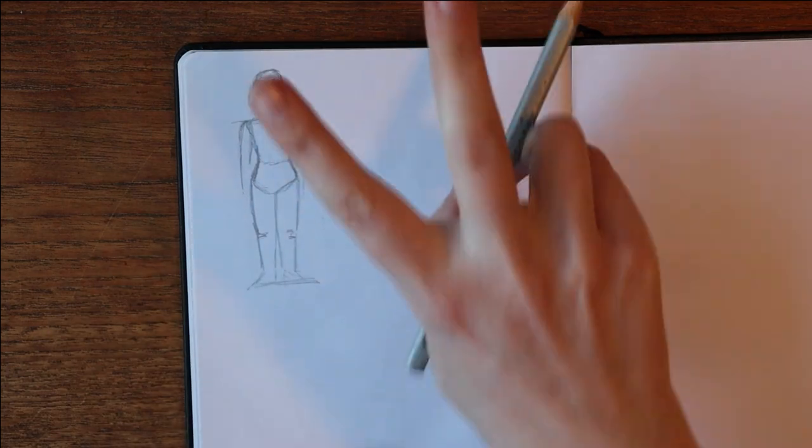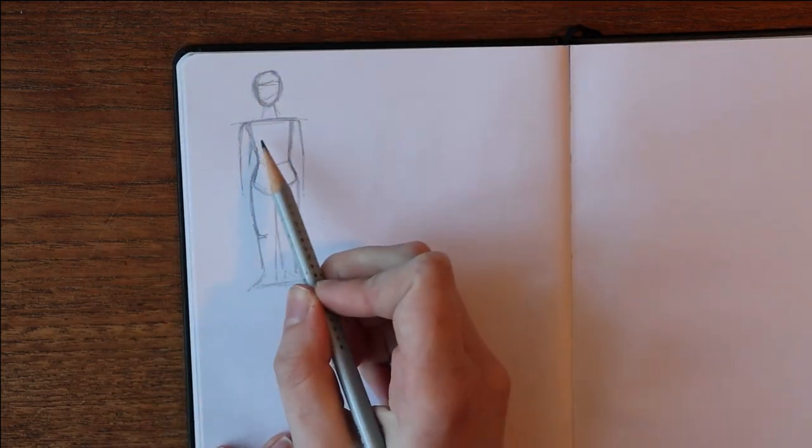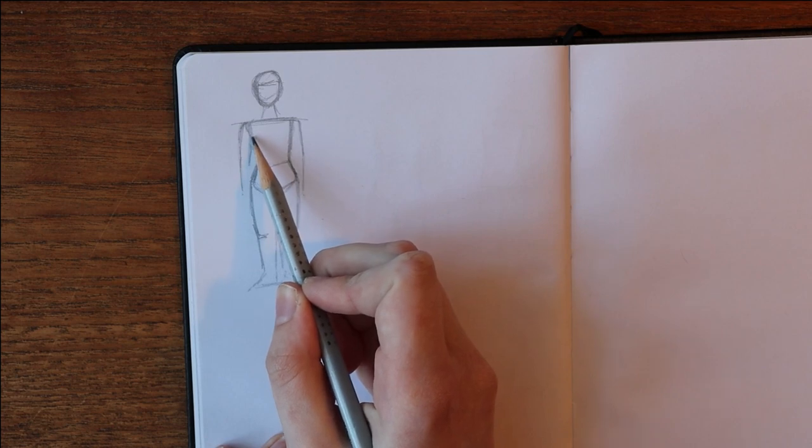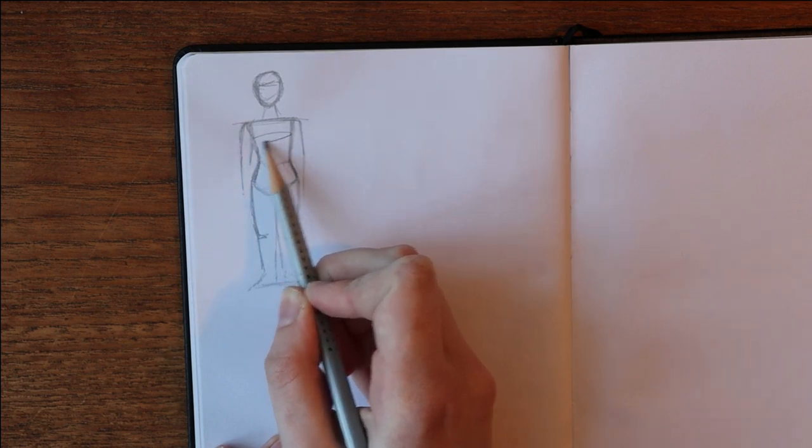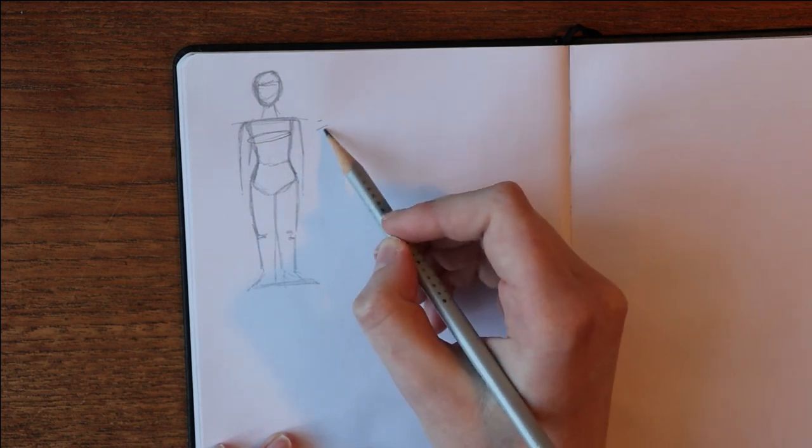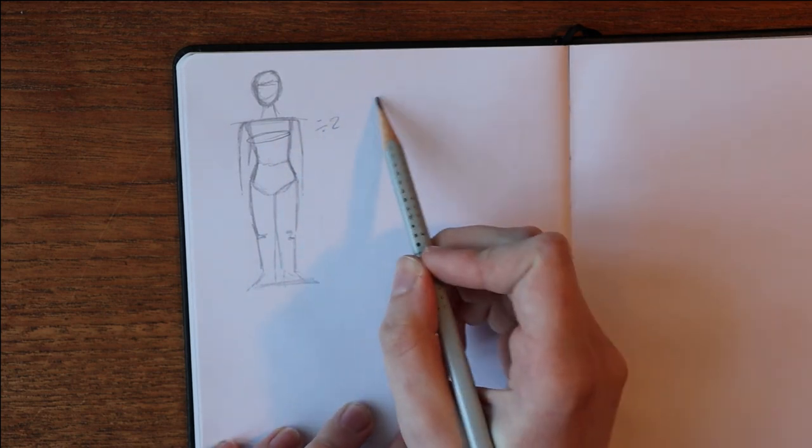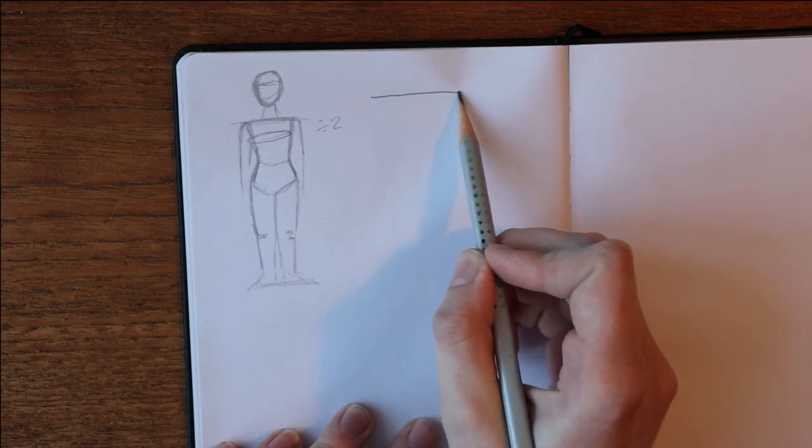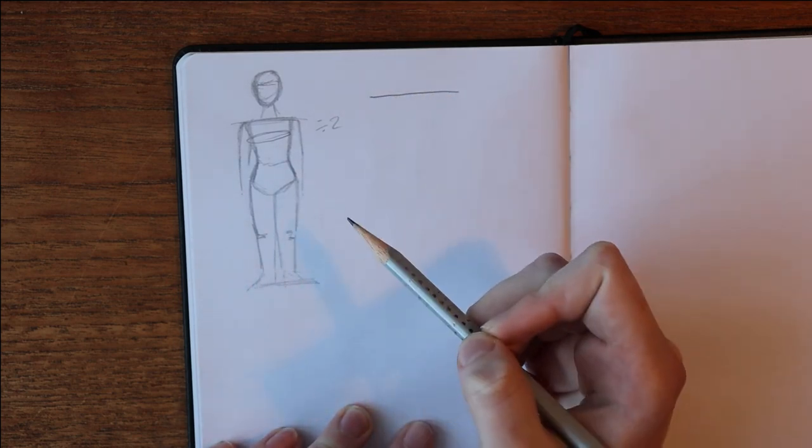You are going to need two measurements this time. The measurement around your torso at the widest point, which is the bust for most women. This measurement you are going to divide by two, and it's going to be the width of your rectangular front and back panels.